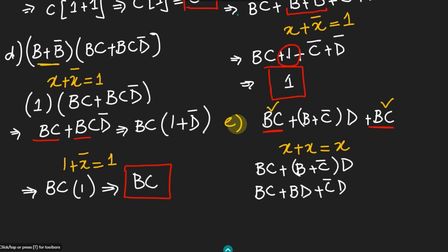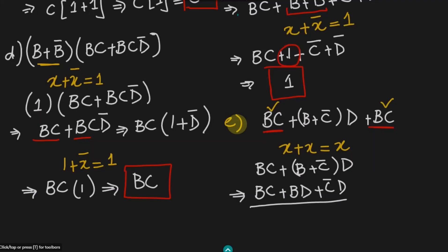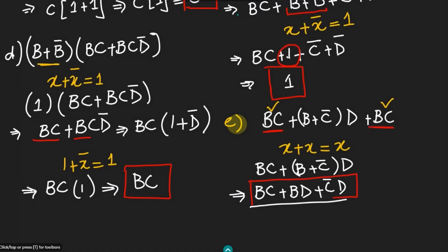This expression cannot be further simplified because this is the final simplified version. So the simplified answer is BC plus BD prime plus C prime·D. We can also factor BC as a common term from another arrangement, but both forms are valid simplified versions that cannot be simplified any further.